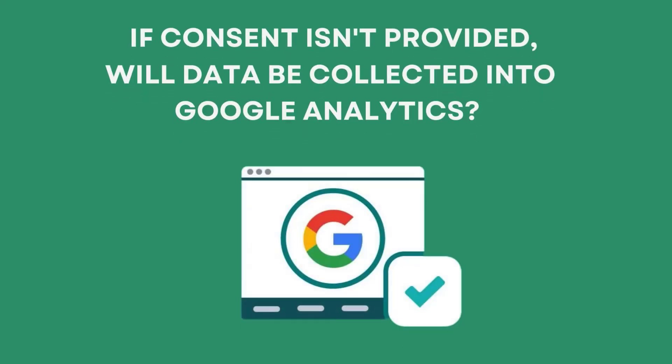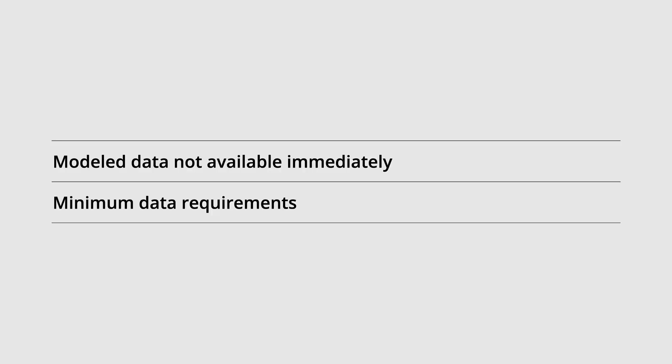The next question is, if consent isn't provided, will data be collected into Google Analytics? This depends on whether consent mode has been implemented, and if it has, it will also depend on how it has been implemented. Basically, if consent mode hasn't been implemented using a consent banner on your website, then you will still be collecting data from people located in Europe into your report. If you have implemented consent mode and consent isn't provided, basic information or hits will be sent to Google Analytics. If you collect enough of these basic or anonymous hits, Google Analytics will use machine learning to provide modeled data in your report. It will take some time for modeled data to become available.